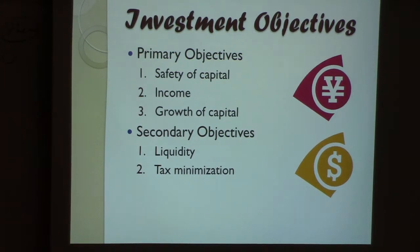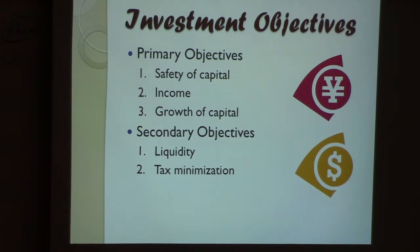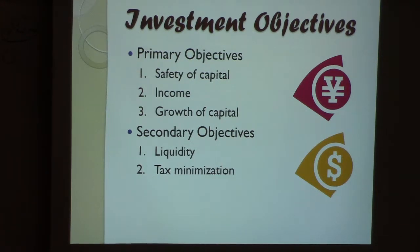Growth of capital is usually the main objective for young people — under 30 or 35 — because they have time ahead and can take risks. As a teenager you may have money but few expenses, so some of that goes into growth of capital. Income is really for those relying on investments to generate income, such as senior citizens, retired people, the unemployed, or those without sufficient other income. Safety of capital applies to everyone: new investors, seniors afraid of high risk, and anyone during a recession looking to safeguard their money.